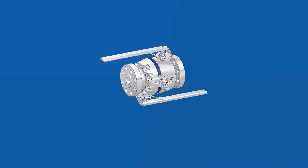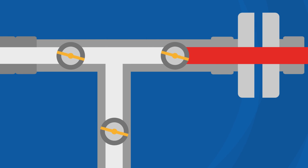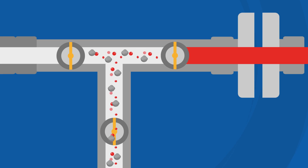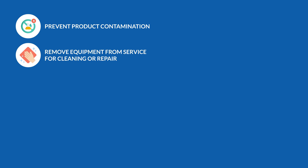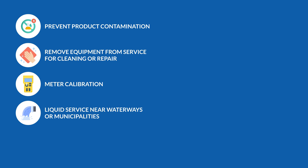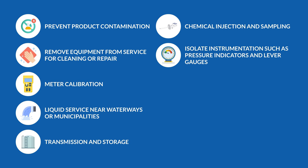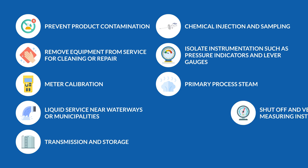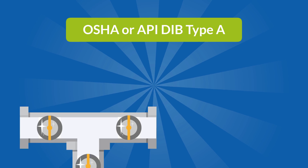Double block and bleed valves are most commonly used in the oil and gas industry but can also be helpful in many other industries. They are typically used where bleeding the valve cavity is required or where piping needs positive high-level isolation for maintenance, or for scenarios such as: preventing product contamination, removing equipment from service for cleaning or repair, meter calibration, liquid service near waterways or municipalities, transmission and storage, chemical injection and sampling, isolating instrumentation such as pressure indicators and level gauges, primary process steam shut-off, and venting pressure measuring instruments.